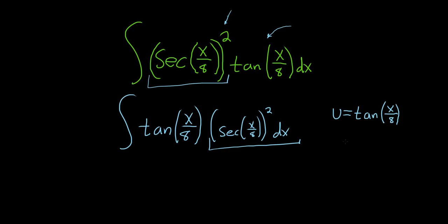Now, notice that when we take the derivative of tangent, well, the derivative of tangent is secant squared of x over 8, times the derivative of the inside, which is just 1 over 8. That's the chain rule. And then dx.